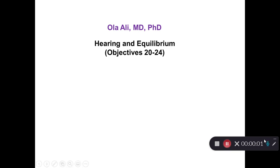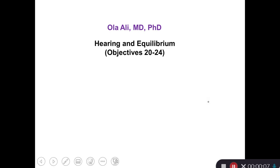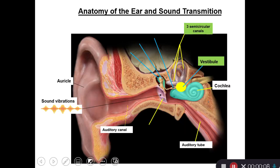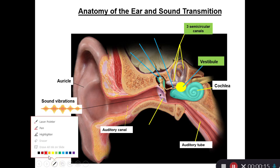Hello everyone, this is Ola. In this video I discuss the hearing mechanism. Let's go ahead and review the anatomy of the ear quickly. There are three ears: external, middle, and internal.